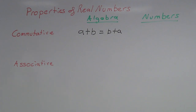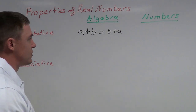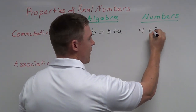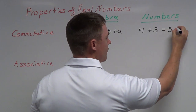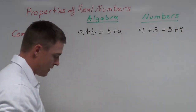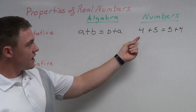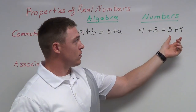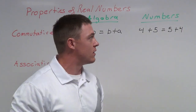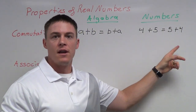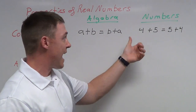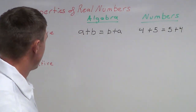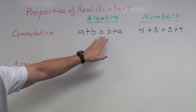Now let's do that with numbers. Let's choose 4 and 5 for A and B. So 4 plus 5 is equal to 5 plus 4. If I take 4 plus 5, I get 9. On the other side of the equal sign, 5 plus 4 is also 9. We can see with these real numbers that it doesn't matter what order I add the two numbers in — I'm still going to get the same answer. That's the commutative property of addition.